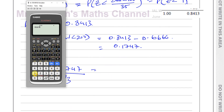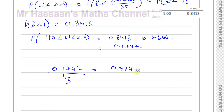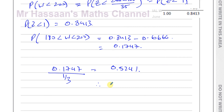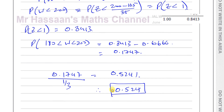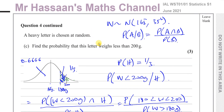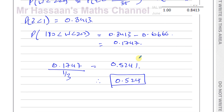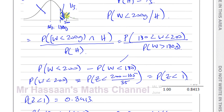That gives us 0.524 to 3 significant figures. So the probability that the chosen heavy letter weighs less than 200 grams is 0.524. That is the answer to part C.